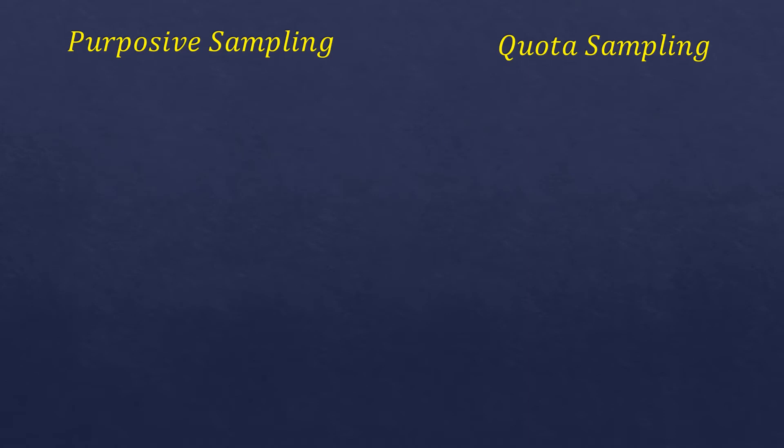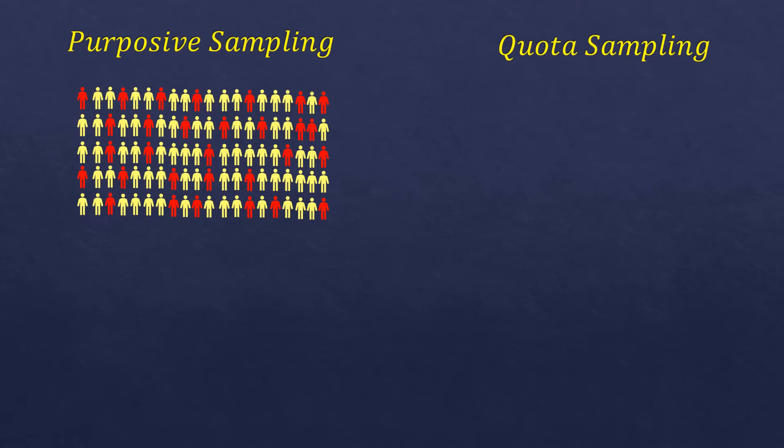Let me illustrate the difference between these two kinds of sampling. Starting with purposive — let's say we have a population of 100. As you can see, there are red and light yellow colored human icons. The red icons are female — there are 30 of them — and the light yellow icons are male — there are 70 of them. So there are 70 males and 30 females in this population.